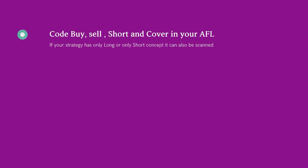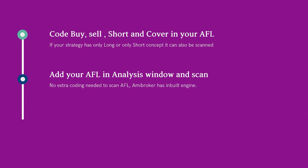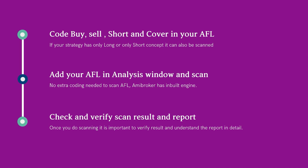To run a scanner on AMI Broker, first you need to code Buy, Sell, Short, and Cover in your AFL. If your strategy has only long or only short concept, it can still be scanned — no extra coding beyond the buy/sell or short/cover logic is needed. Just add that AFL in the analysis window and click Scan. AMI Broker has an inbuilt engine — in the EMA crossover I attached and scanned, I have not added any extra lines of code. The inbuilt engine automatically scans and generates buy and sell signals. You can also check and verify the scan result against your broker terminal, as I compared the EMA crossover of Aarti India on AMI Broker with my broker to verify the data. This verification is very important in the long run.